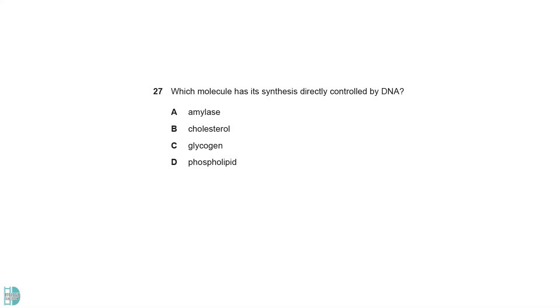DNA codes for protein. Amylase is an enzyme. So DNA directly codes for it.